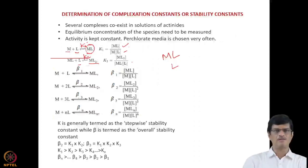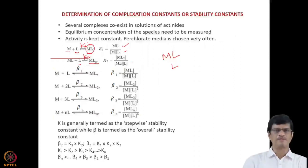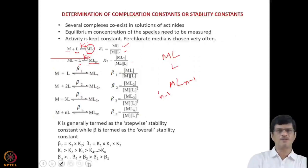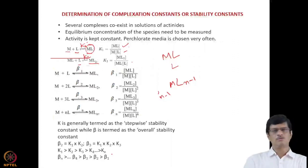On the other hand, for the overall complex formation constants, βₙ is greater than βₙ₋₁, and similarly β₄ > β₃ > β₂ > β₁. This is how the complex formation constants are defined.